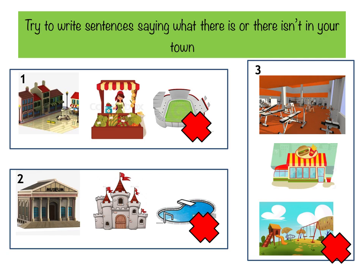For this activity, look at the three boxes. Each box has three pictures representing what there is or isn't in your town. For example, in box one there's a picture of a town square, a market, and a stadium with a cross — meaning there is no stadium. Write in Spanish: 'there is a town square, there is a market, there is no stadium.' Do the same for box two — a museum, a castle, and a swimming pool with a cross — and box three — a sports centre, a restaurant, and a park with a cross. Refer back to your notes.